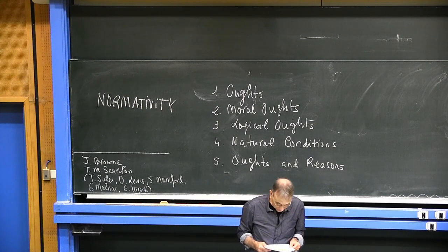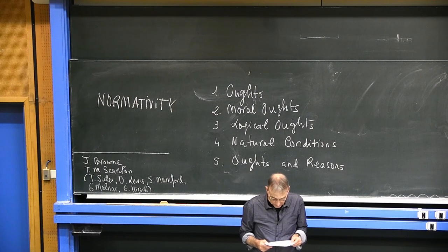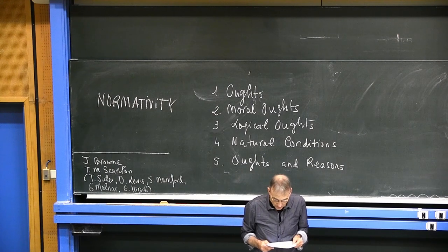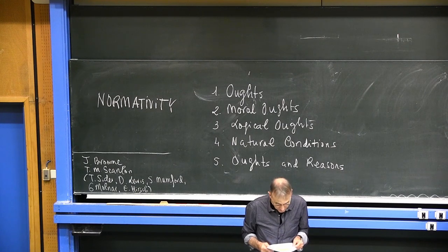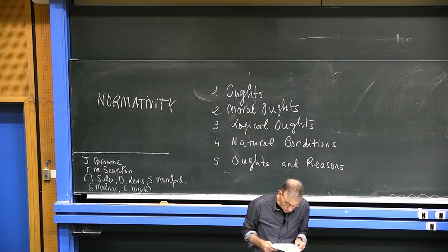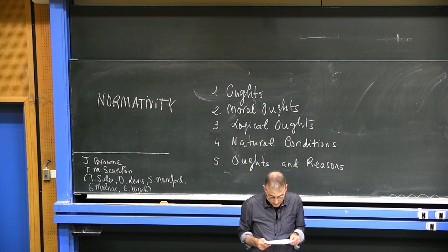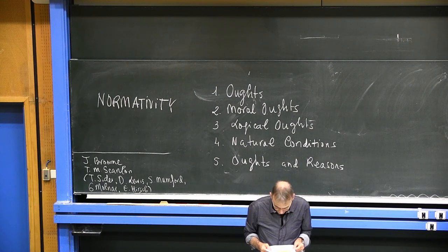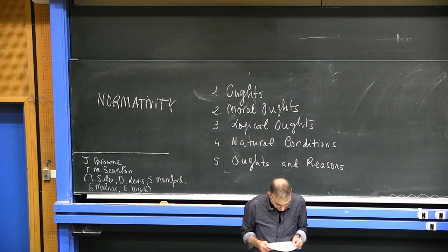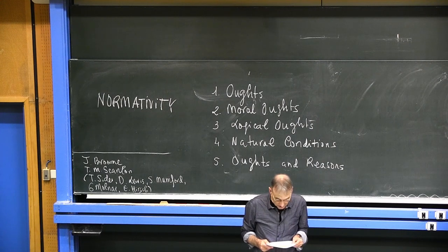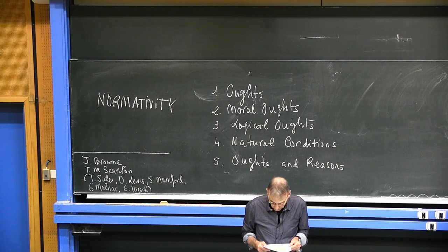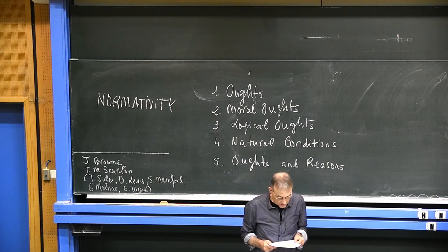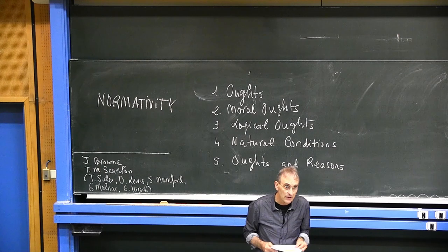Objective oughts are outcome oughts. There are situations where you ought to do what will have the best consequences. Prospective oughts, on the other hand, present a portfolio of possible outcomes, each associated with a probability. Outcome oughts tell us what we ought objectively to do. Prospective oughts are relative to probabilities and expected values.